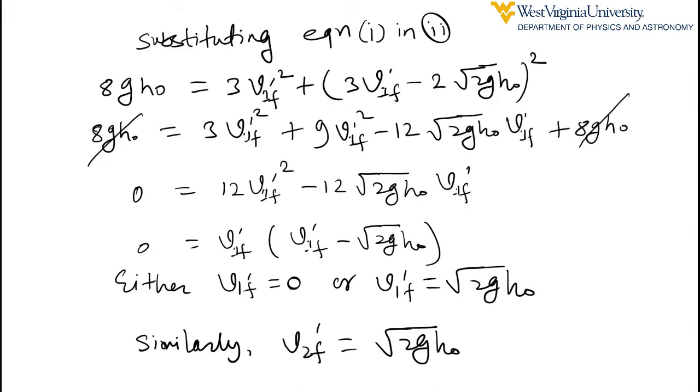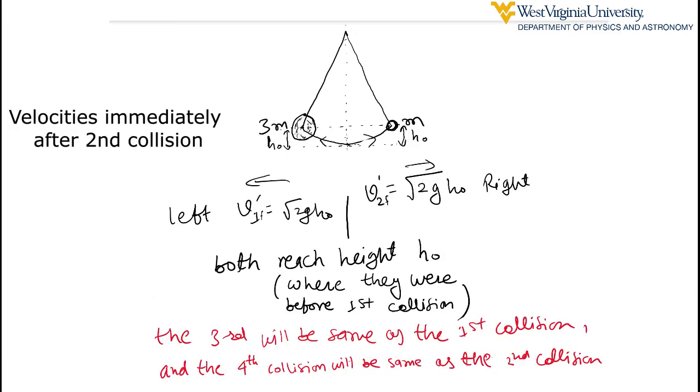So, they share kinetic energy. The three m ball gets back its same kinetic energy and same momentum but in opposite direction where it was in the first collision.